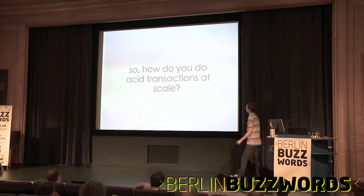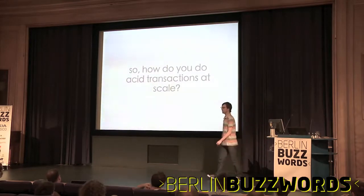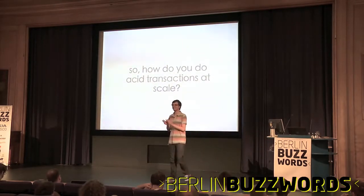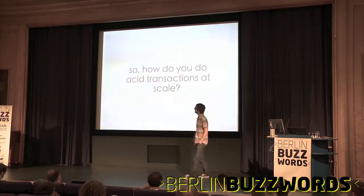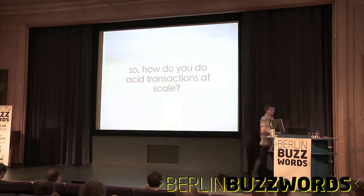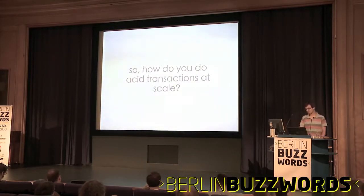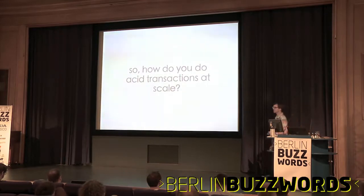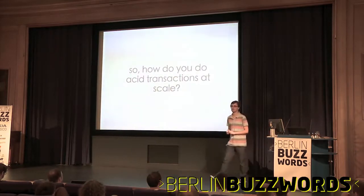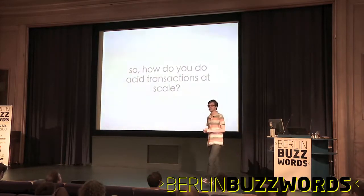20 minutes to present this. How do you do ACID transactions at scale? That's why you're all here, I hope. Bottom line — what were the problems? How many here are familiar with the problem of scaling an inverted index?